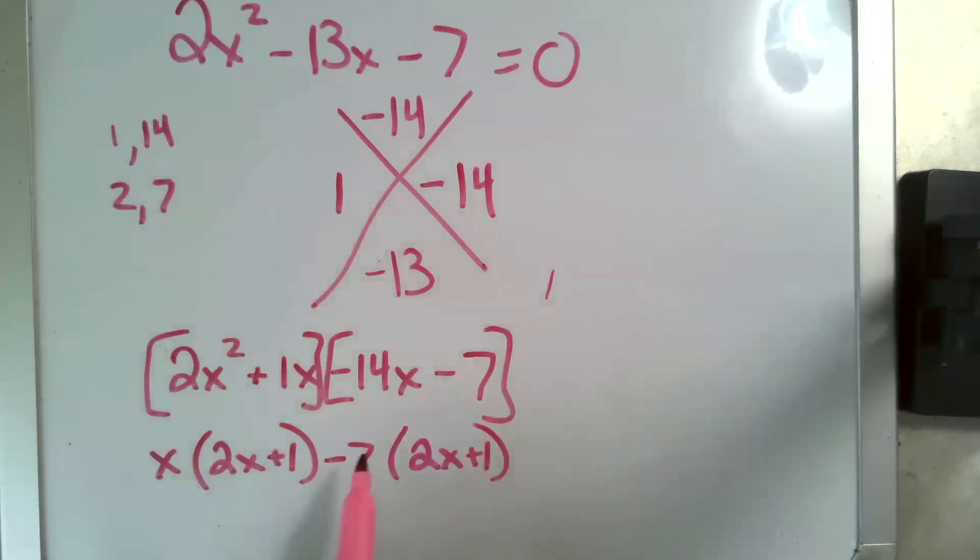And now, I'm going to factor these two things out. And that is my fully factored version, which leads me to my factors being 7 and negative 1 half, which is what we got when we did the quadratic formula.